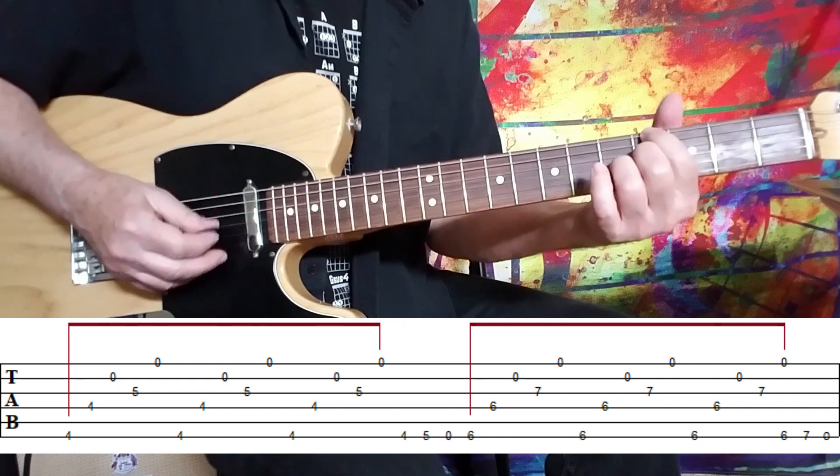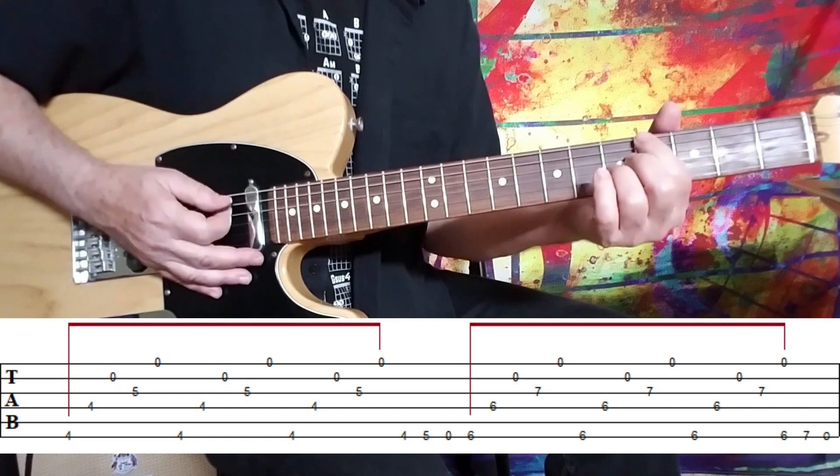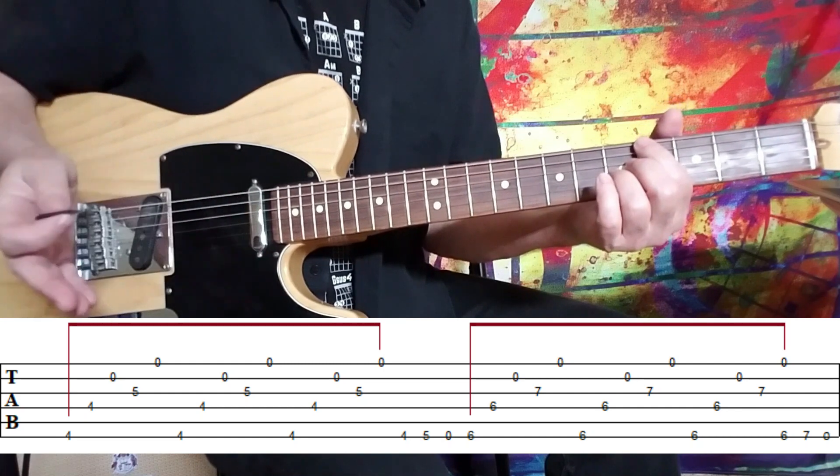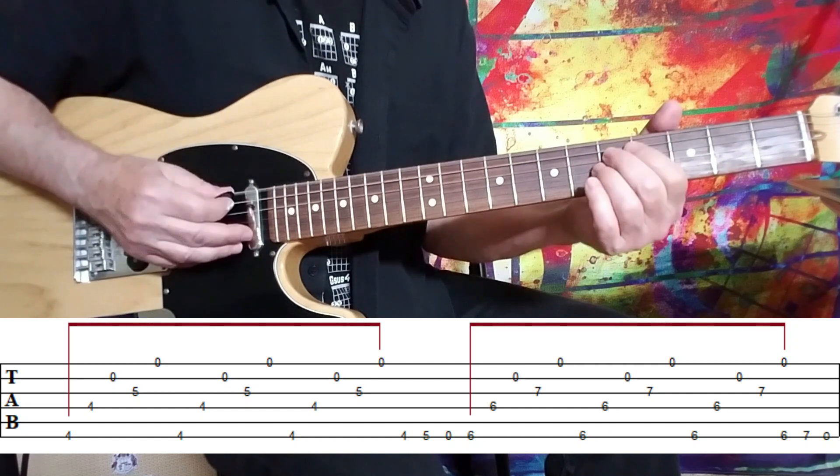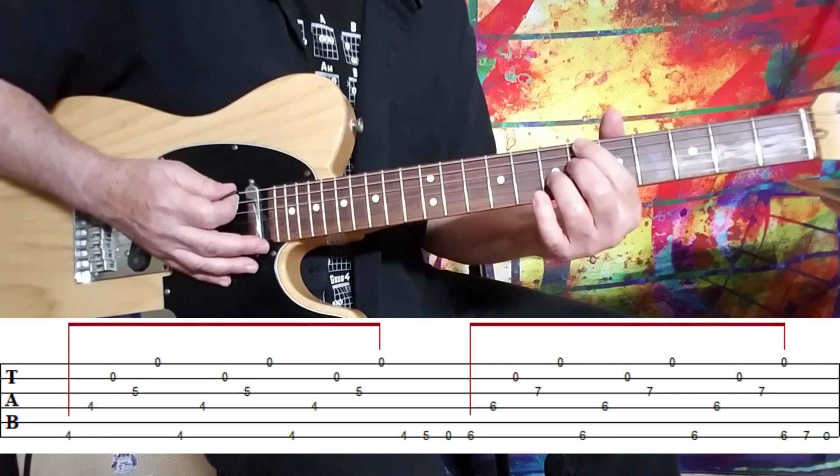So you can see it's the same down down up down up, and then for the three notes in between I just use alternate picking and then start it over again a whole step higher.